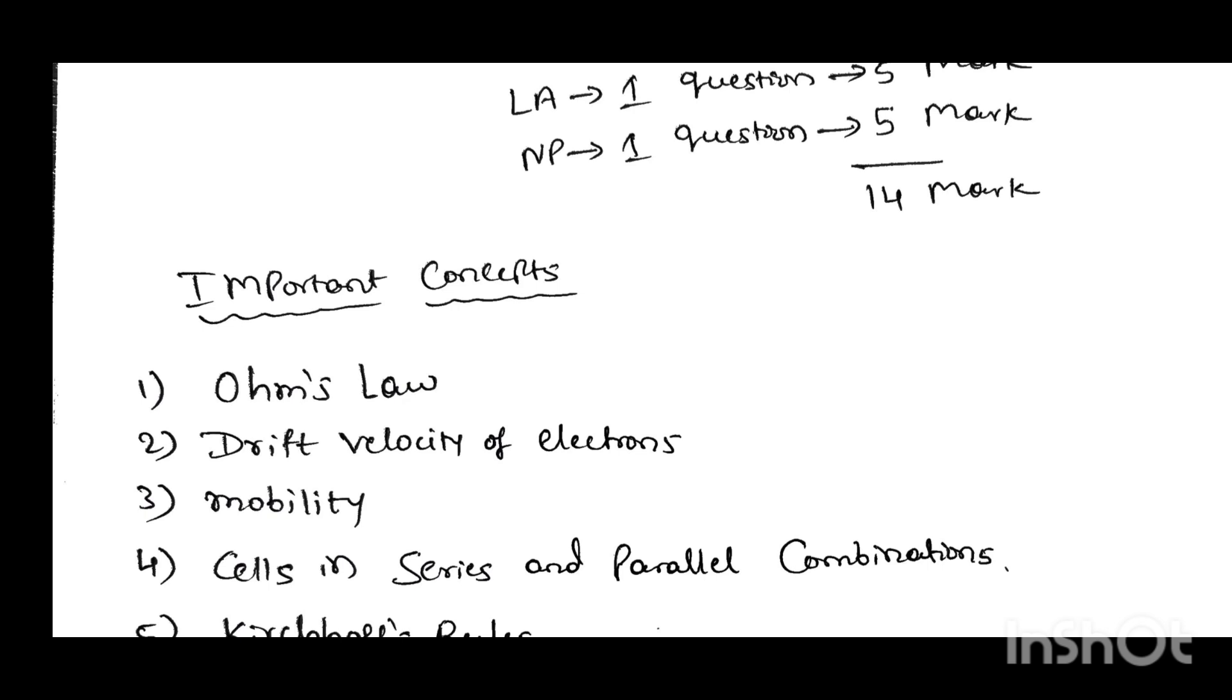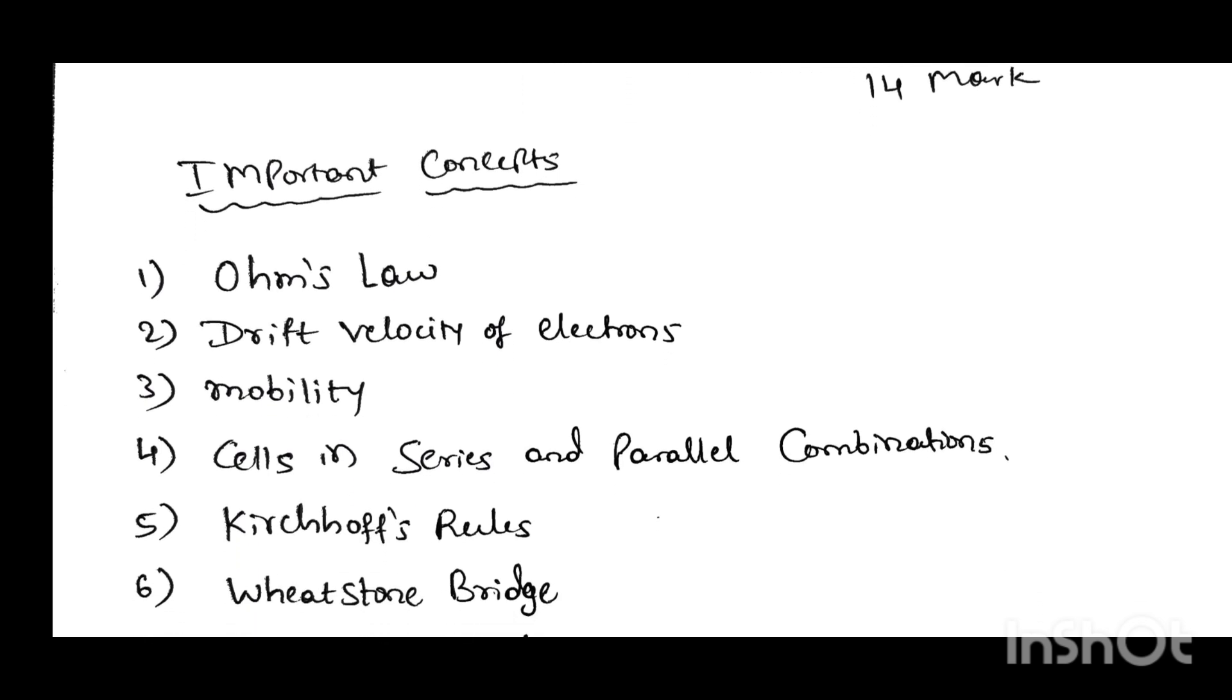Second one, drift velocity of electrons. Here, you may get derivation of drift velocity. It may ask for 3 marks or 5 marks. Next, mobility.